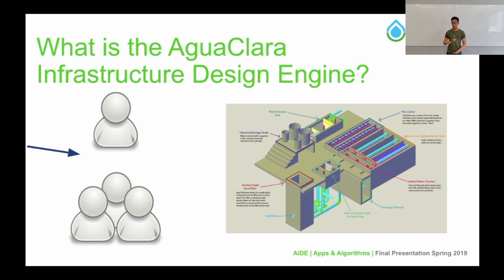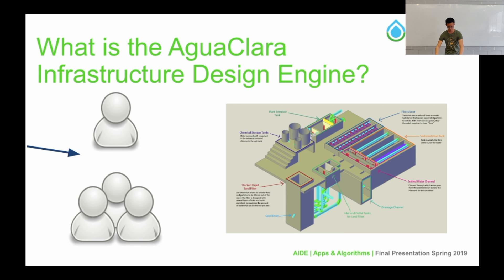AID allows us to automatically redesign water treatment plant designs by taking in a single variable — flow rate — and then running calculations based off of that. We can then redesign the 3D models of these plant designs.